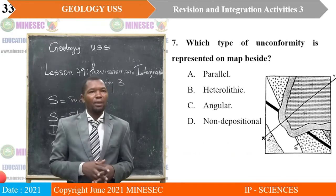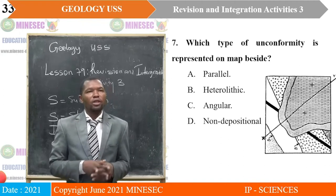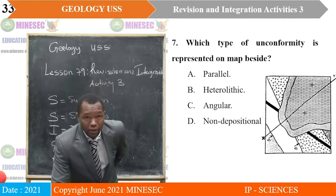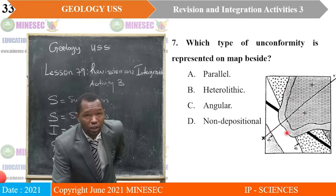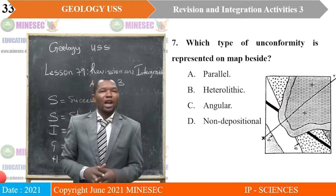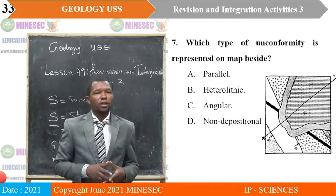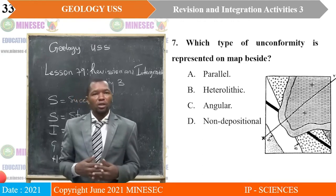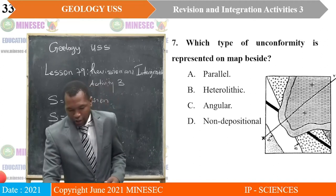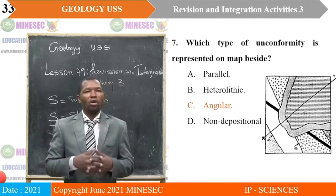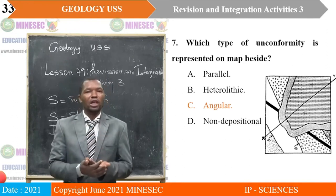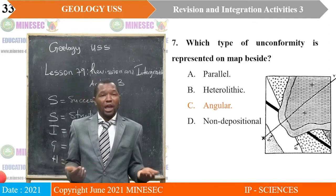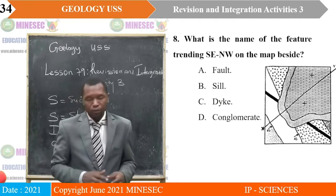Question seven is still related to the map. Which type of unconformity is represented on the map? Looking at the map, two beds are lying horizontally on beds that are dipping. So the plane of unconformity would be traced there. The options are A — parallel; B — heterolithic; C — angular; D — non-depositional. The correct answer is C, angular unconformity, because horizontal beds are lying on inclined beds — they obviously have different dips.